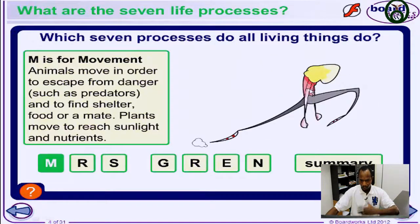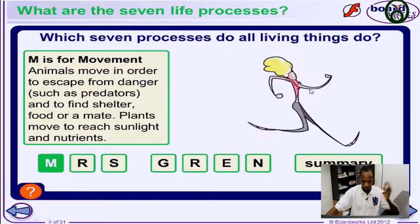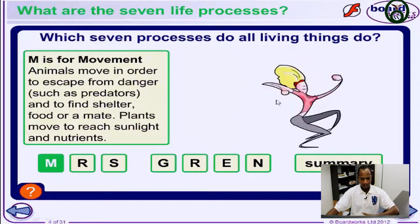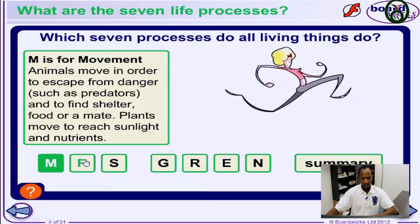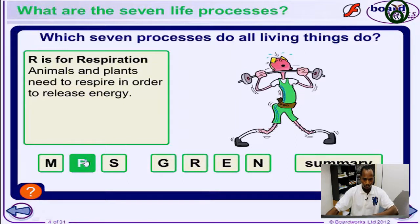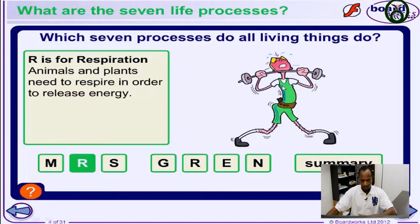Even plants that you don't see moving from place to place show some growth movement. So all living things do show movement. Another life process is respiration — all living things, plants and animals, respire in order to release energy for their life processes and for metabolic reactions.